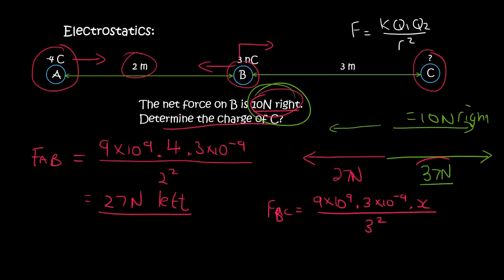But we know what the force is supposed to be. We know that between B and C there is a force of 37 newtons, so we can say 37 newtons. Now we need to solve for X. So we say 37 times 3 squared, divided by 9 times 10 to the 9, times 3 times 10 to the minus 9, equals X.